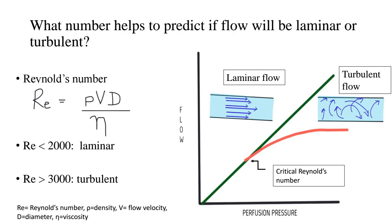This is what we see in that graph to understand this concept further. We have flow versus the perfusion pressure, and as the flow and perfusion pressure increase, there is laminar flow. However, at a certain point, a critical Reynolds number is exceeded — for example, if the Reynolds number becomes more than 3000, suppose it becomes 4000 — then at this point the flow is no longer laminar and it now starts becoming turbulent.